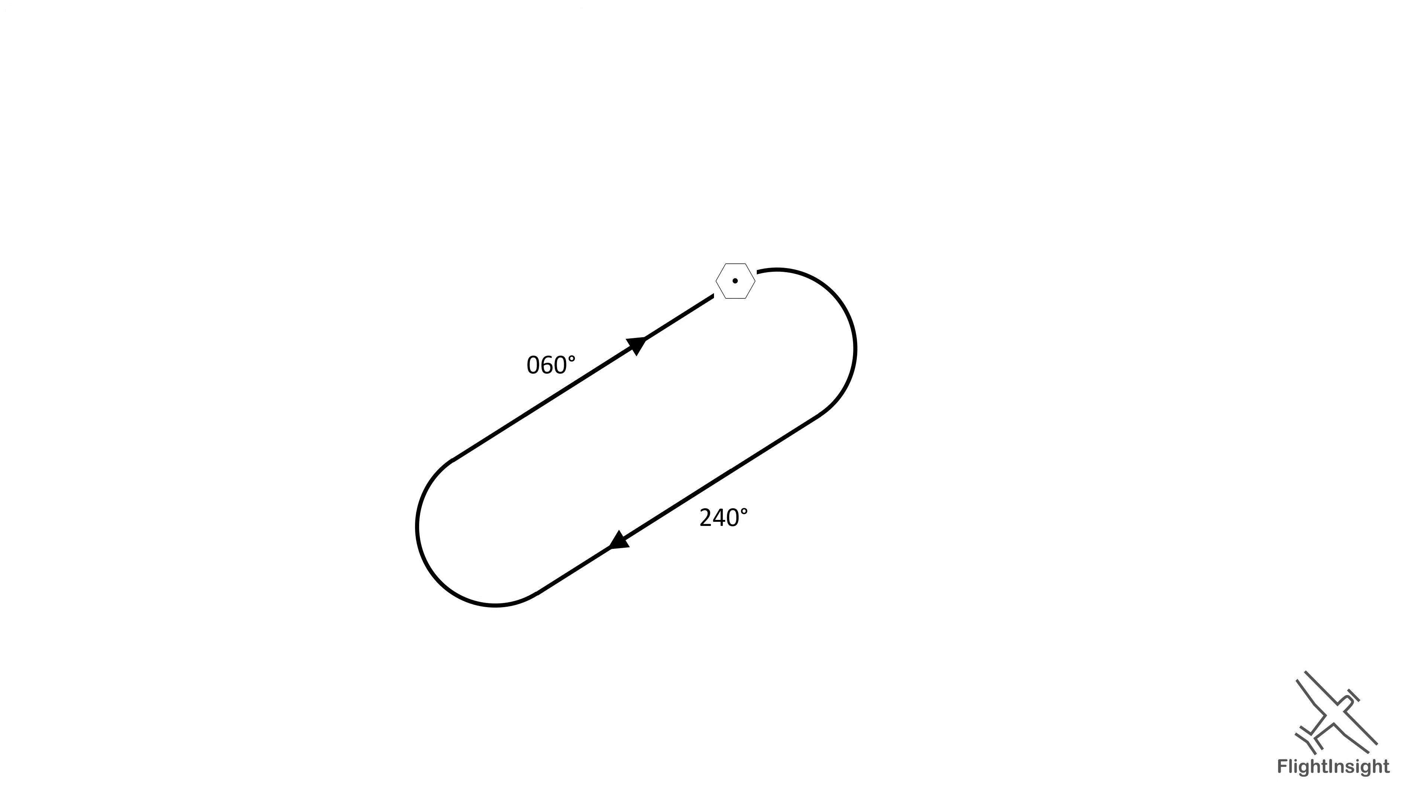It's one thing to be able to visualize these holds using the diagrams, but what if you're only given verbal instructions for the hold, and it might not be published where you can look at it? Again, part of the instruction will sound like this: hold southwest of the VOR on the 240 radial.